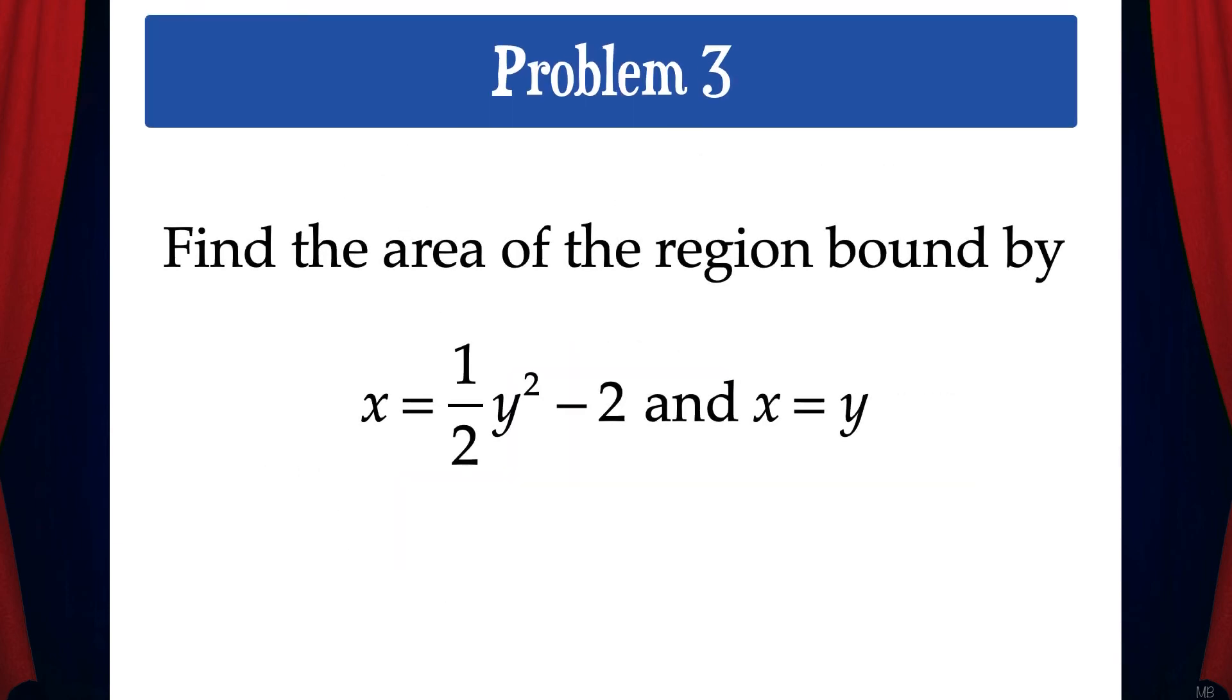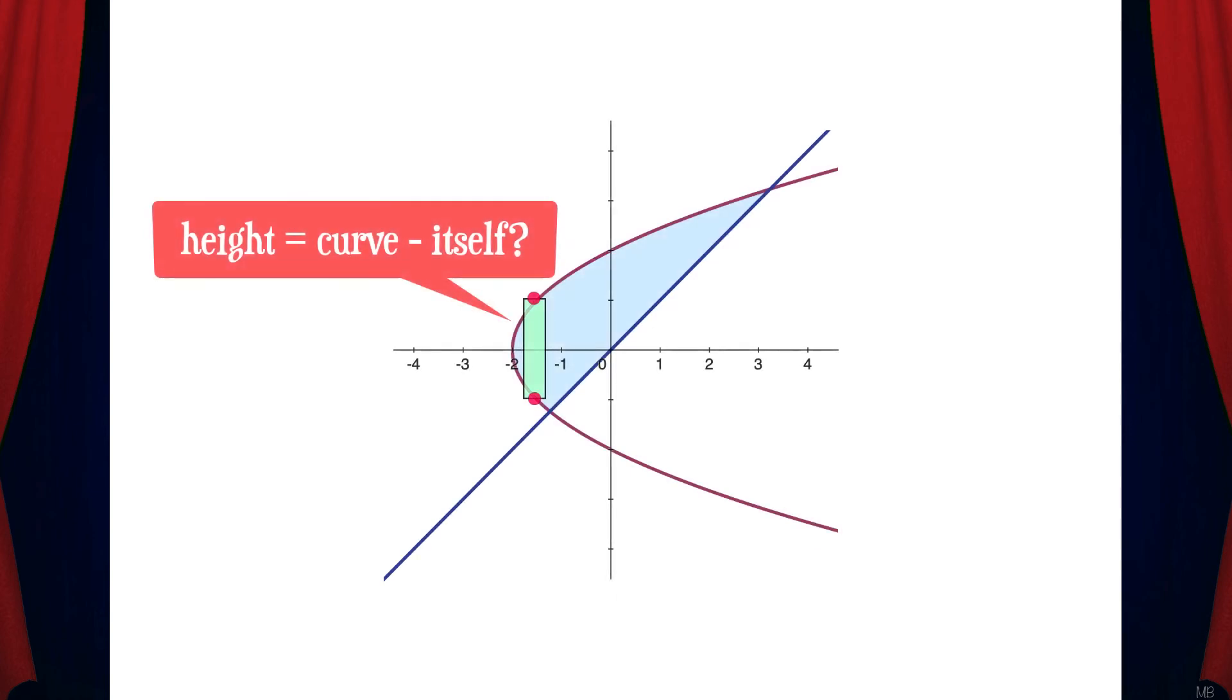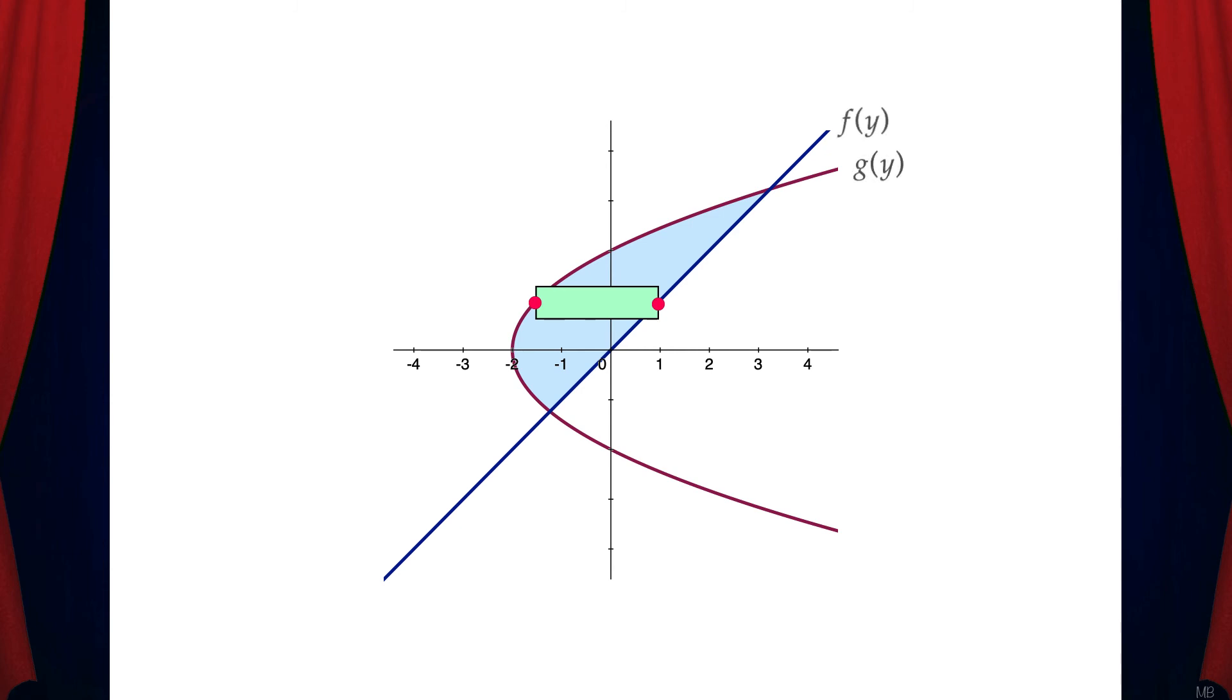Let's do one last example. Find the area of the region bound by x = 1/2 y² - 2 and x = y. When we graph this, we can see that there are parts of the region where the top of the parabola is above the bottom of the parabola. That means we should use a horizontal orientation for the sample rectangles. Let's call the line f(y) and the parabola g(y).